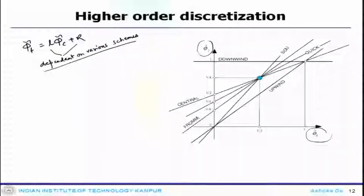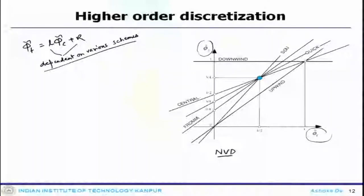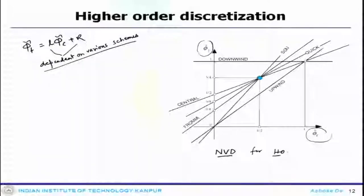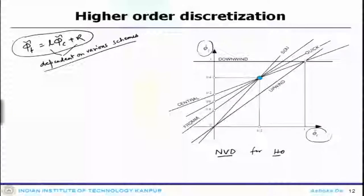These are dependent on various schemes. As we said, this complete diagram is called the normalized variable diagram or NVD for higher order schemes. Once you plot them in this kind of formulation, everything will look like a straight line.